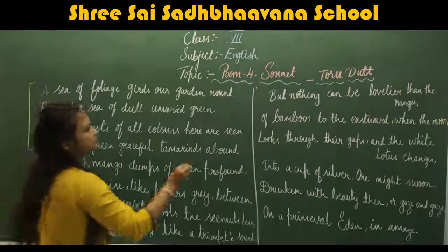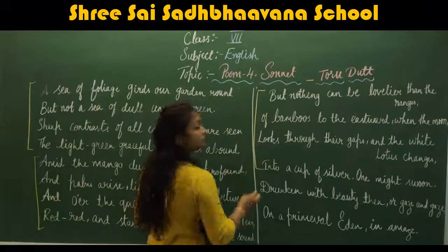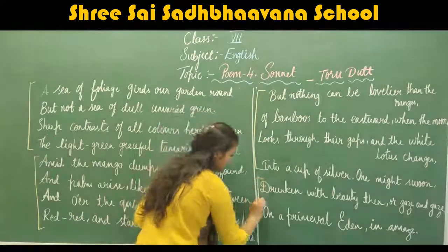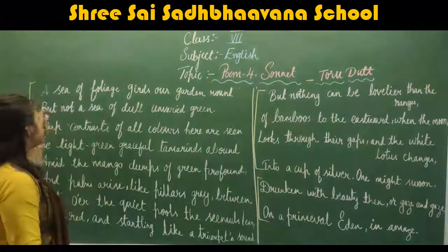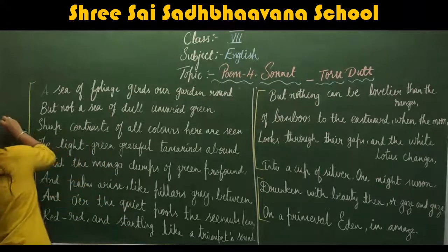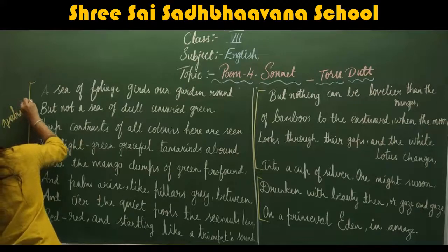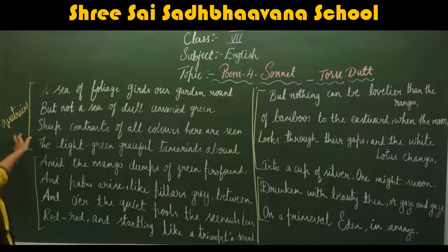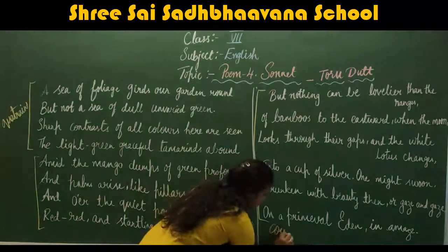So the structure is: first four lines, second four lines, third four lines, and the last two lines. These groups of four lines are known as quatrains, and the last two lines are known as couplets.